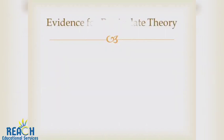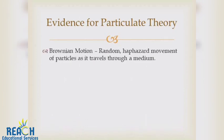Our final piece of evidence will be Brownian motion, which refers to the random haphazard movement of particles as it travels through a medium. This is often seen if we've got dust particles in the air. We can see them just moving around all over the place very randomly. We can also see the same thing happening if we've got things floating in a liquid medium.